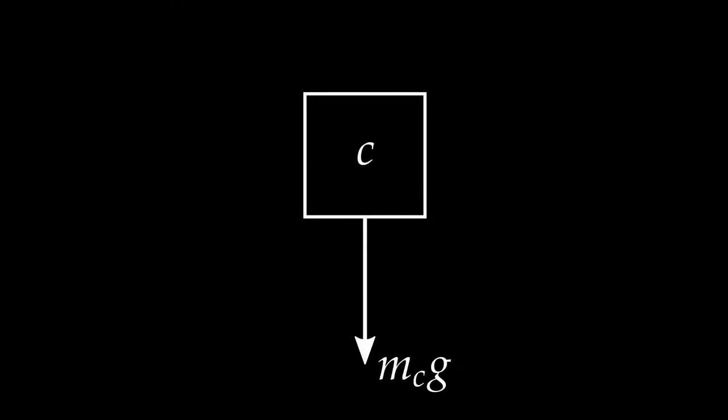I begin with a general list of forces. The first force on that list is the weight. When doing physics near the surface of the earth, gravitational force can be relied upon. Its strength is the mass multiplied by the acceleration due to gravity g, and it points directly downward toward the center of the earth. So I draw an arrow directed downward and label it with the weight of the cart.